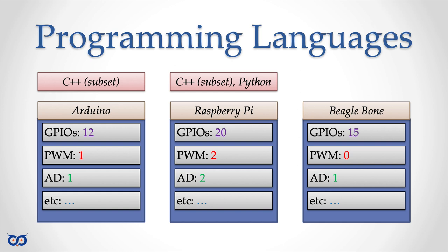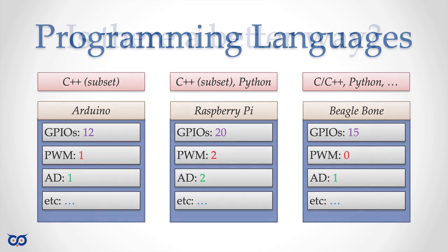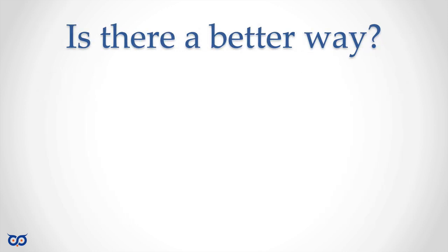Some boards support something like Processing or Wiring — a subset of C++. Others like Raspberry Pi support C++, Python, Ruby, and so on. BeagleBone supports C, C++, Python, and even bash shell since it runs a full Linux OS. But even if you know C++, the Arduino library, the Raspberry Pi library, and the BeagleBone library for controlling GPIOs are all very different.